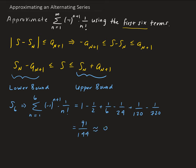We can approximate that as 0.63194, using five decimal places.